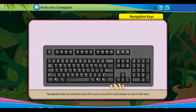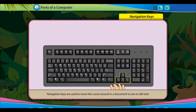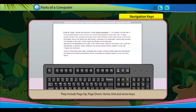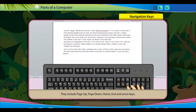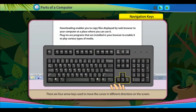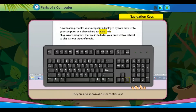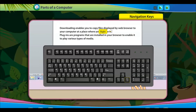Navigation keys are used to move the cursor around in a document to see or edit text. They include page up, page down, home, end and arrow keys. There are four arrow keys used to move the cursor in different directions on the screen. They are also known as cursor control keys.